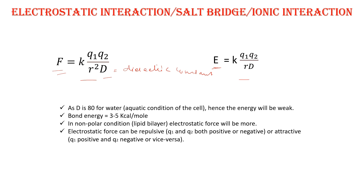Since we are studying interactions in a biological system, and a biological system consists of aquatic conditions, the value of d will be 80 because the dielectric constant of water is 80. So in the biological system we will consider d as 80, making this a weak bond.